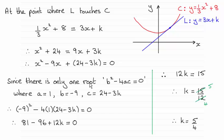So because there's only going to be one root, one solution, remember then for a quadratic equation, b squared minus 4ac should equal 0. So if I substitute these values for a, b, and c into here, we get this equation, which we can solve for k. And it turns out then that k equals 5 quarters.